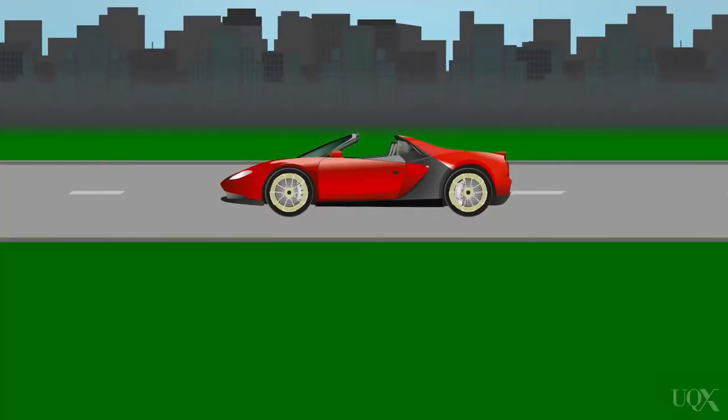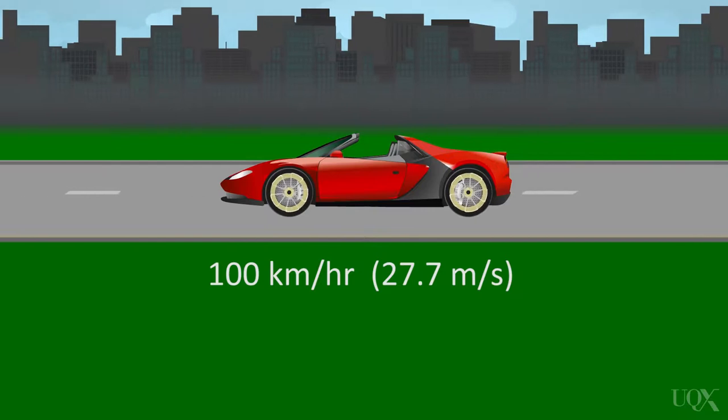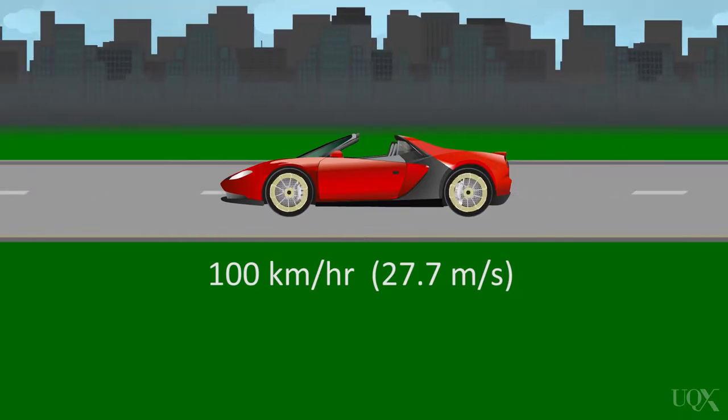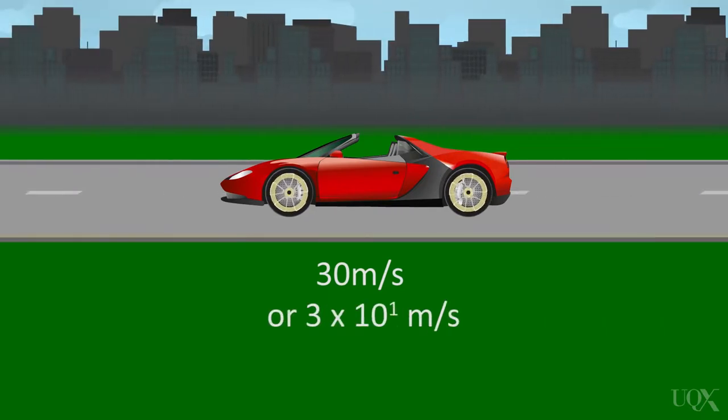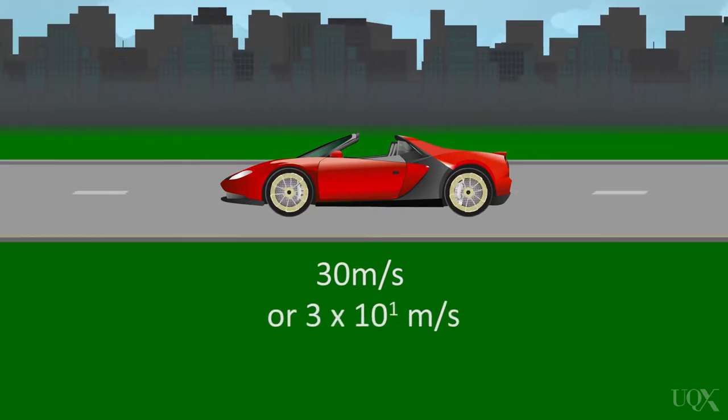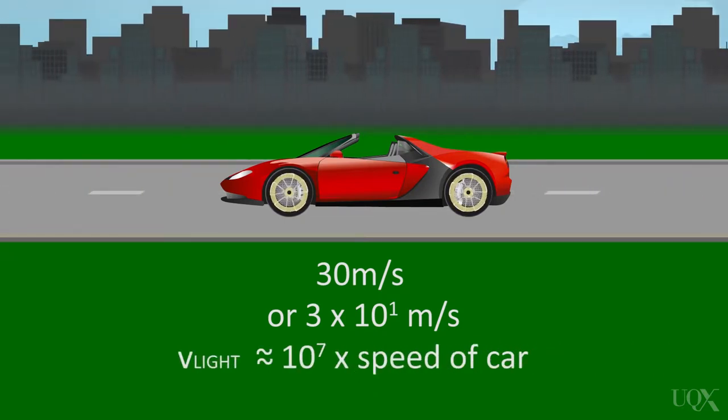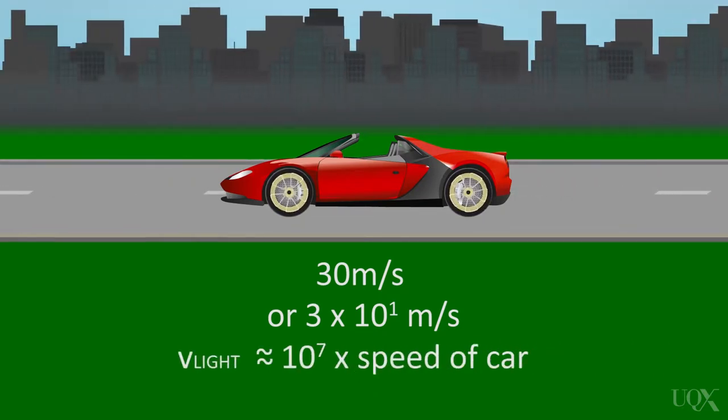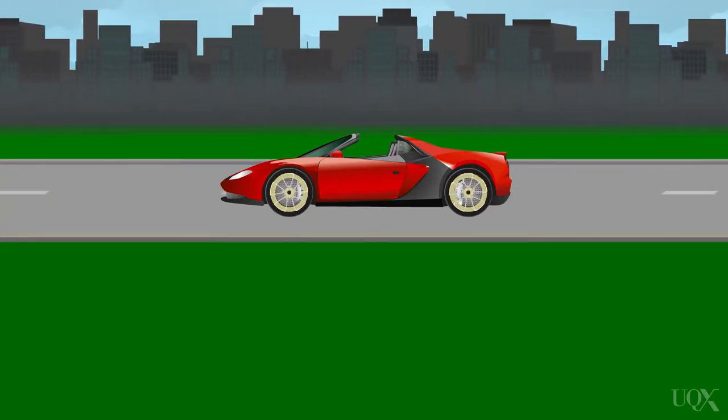Let's assume that the car is travelling at 100 kilometers an hour, or 27.7 meters per second. We can approximate this to 30 meters per second, or 3 times 10 to the 1 meters per second. So light is travelling at approximately 10 to the 7th times faster than the car. This means that any positional error introduced by the speed of light is negligible.